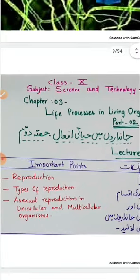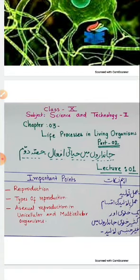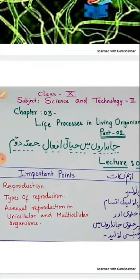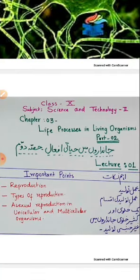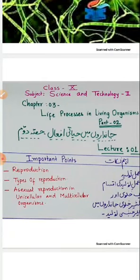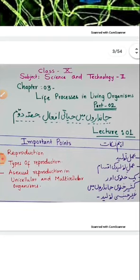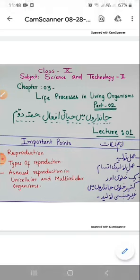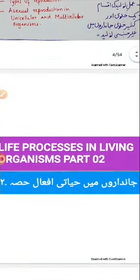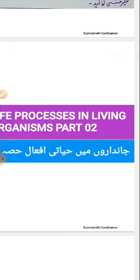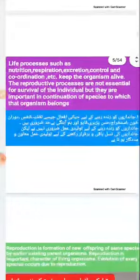In my previous video, I completed the first part of Life Processes in Living Organisms Part Two. In the first lecture we discussed reproduction, types of reproduction, and asexual reproduction in unicellular and multicellular organisms. Now we are going to learn about asexual reproduction in unicellular and multicellular organisms in this third chapter.